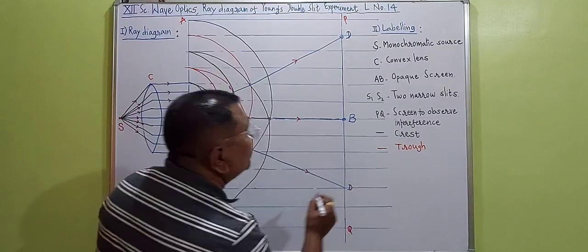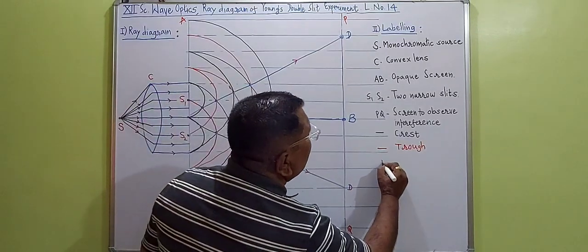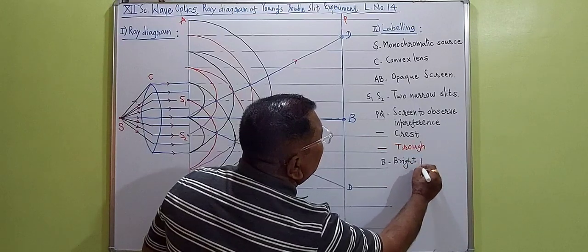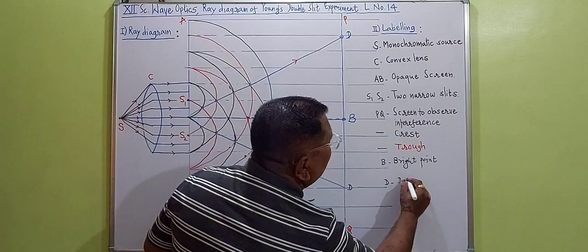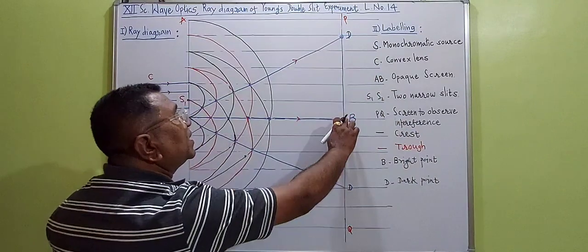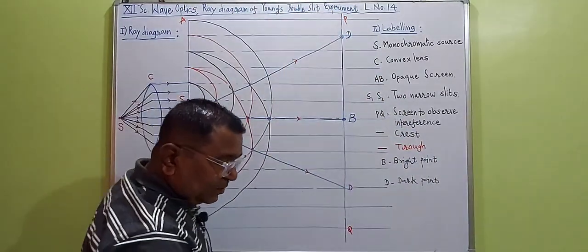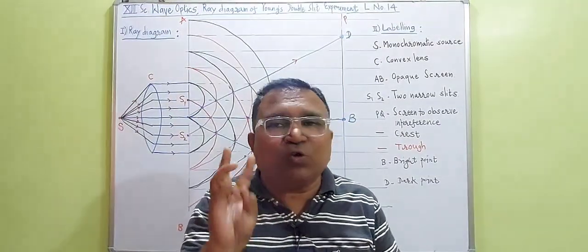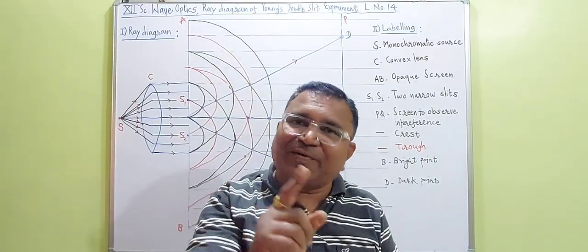B stands for bright point, D stands for dark point. In this way we get alternate bright, dark, bright, dark, bright, dark bands. We can show three bands. The central band is always bright.